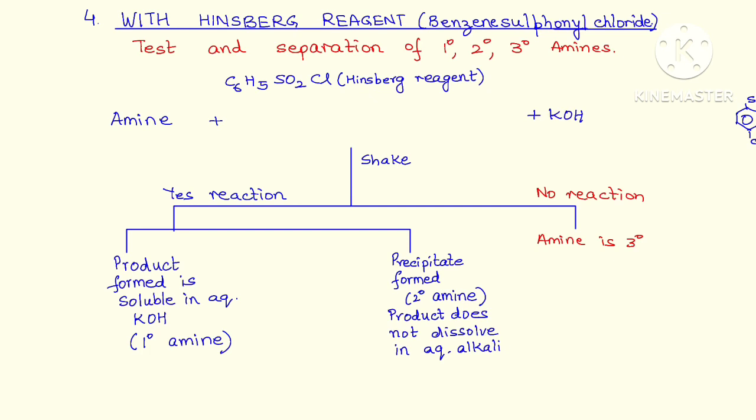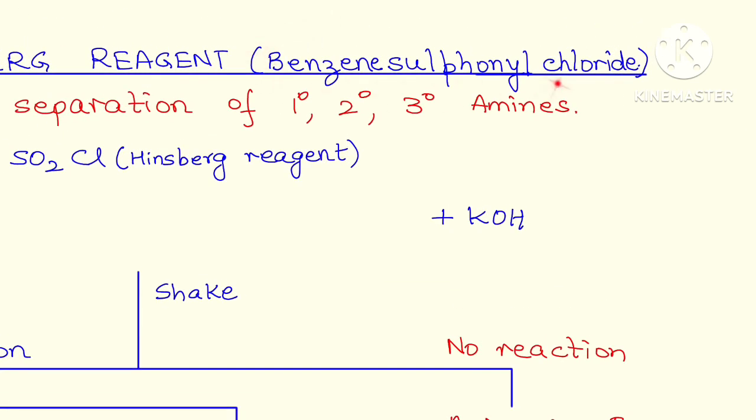Reaction of amines with Hinsberg reagent is used as a method to test primary, secondary and tertiary amines, and also to separate primary, secondary and tertiary amines. What is Hinsberg reagent? It is nothing but benzene sulfonyl chloride.